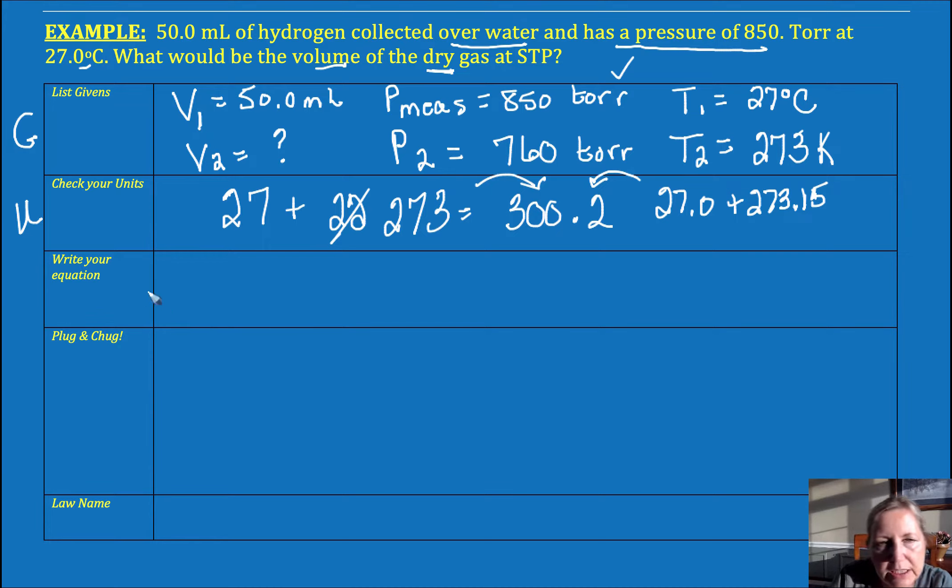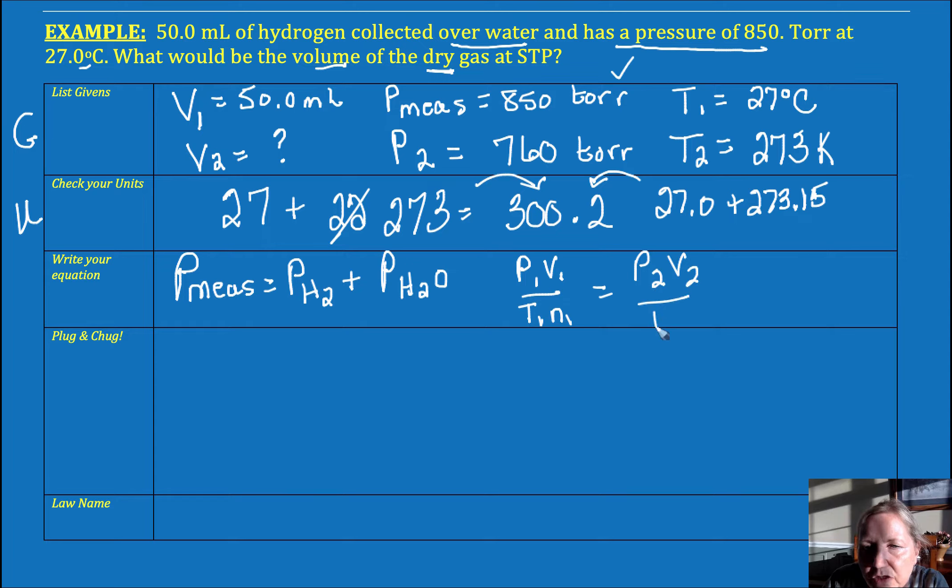Now there are actually two equations here. Because we have a measured pressure over water, I have to apply my Dalton's law. So it's going to be the pressure of the hydrogen that I collected plus the water vapor that I have at 27 degrees Celsius. And then I'm going to do P1V1 over T1N1 is equal to P2V2 over T2N2. And in this case, my only control was the moles. Temperature changed as did pressure and volume. So there are two names here. Let me get a better color. We have Dalton's law and we have the combined gas law.